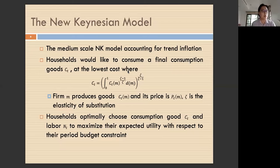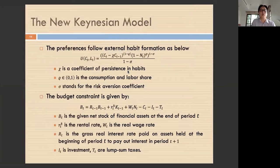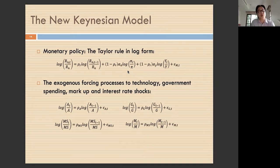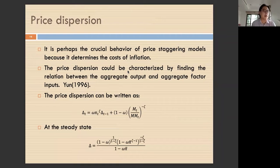We have Calvo price setting. After deriving the optimum price behavior of intermediate firms, the monetary policy rule is set up in log form. We have four shocks: technology shock, government spending shock, markup/price shock, and interest rate or monetary policy shock.